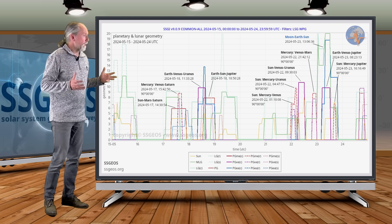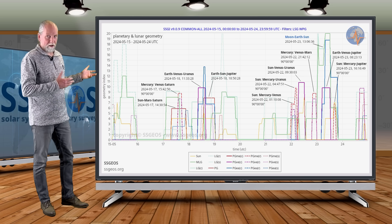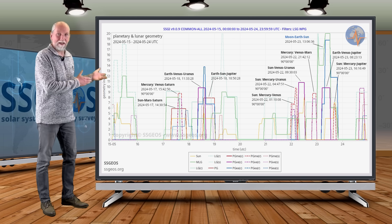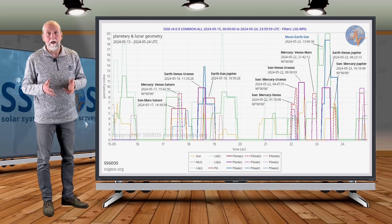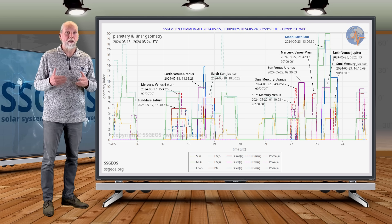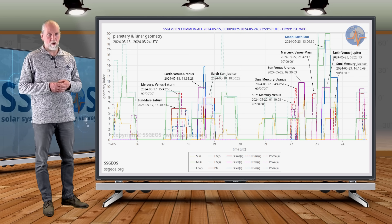In any case, we have critical convergences of planetary lunar geometry coming up. Again, 17, 18 May and even more on 22, 23 May. And we may see really a seismic storm coming up due to this planetary geometry.